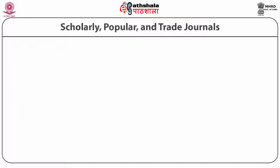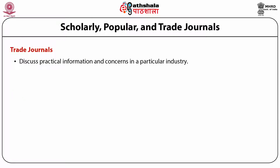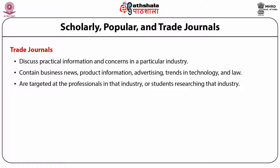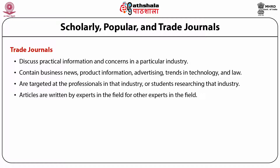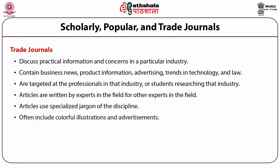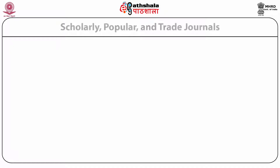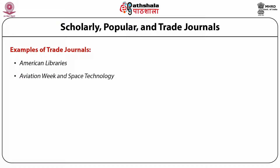Examples of popular magazines include Glamour, Newsweek, Rolling Stone, Time, Economist, and US News and World Report. Trade journals discuss practical information and concerns in a particular industry. They contain business news, product information, advertising, trends in technology and law, and are targeted at professionals in that industry. Articles use specialized jargon, often include colorful illustrations and advertisements, do not involve peer review, and are typically published weekly or monthly. Examples include American Libraries, Aviation Week and Space Technology, Chemical Marketing Reporter, and Restaurant Business.